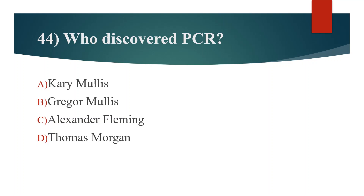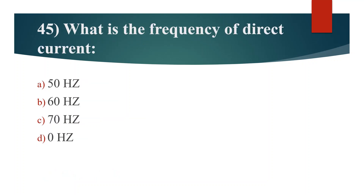Forty-fourth question. Who discovered PCR? Option A: Kary Mullis. Option B: Gregor Mullis. Option C: Alexander Fleming. Option D: Thomas Morgan. Answer is Option A: Kary Mullis.